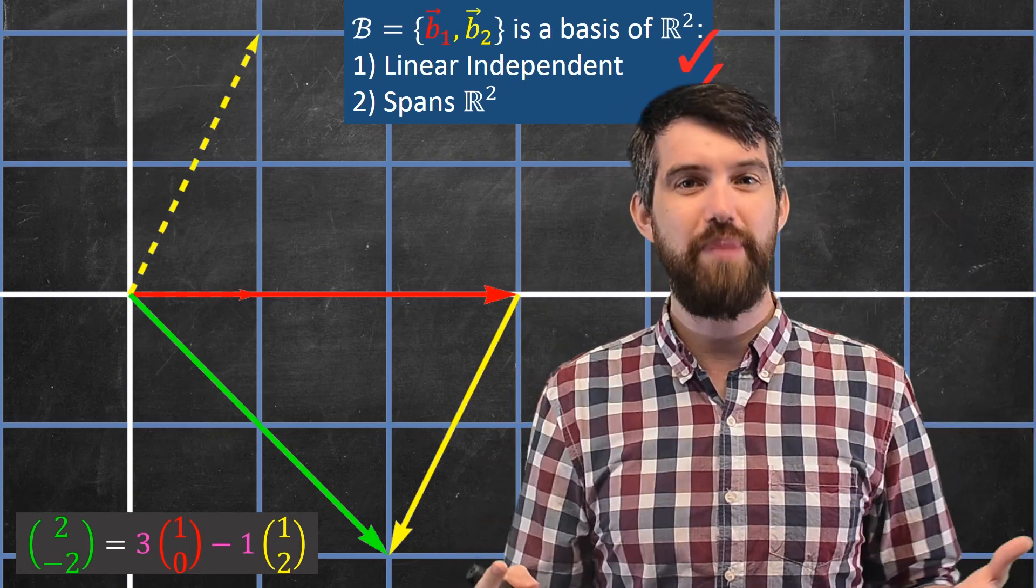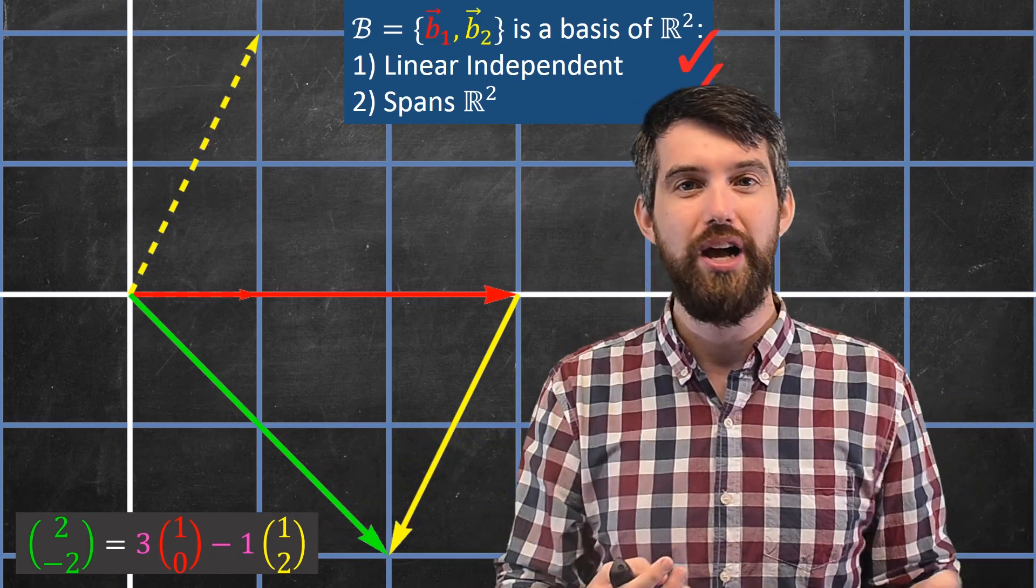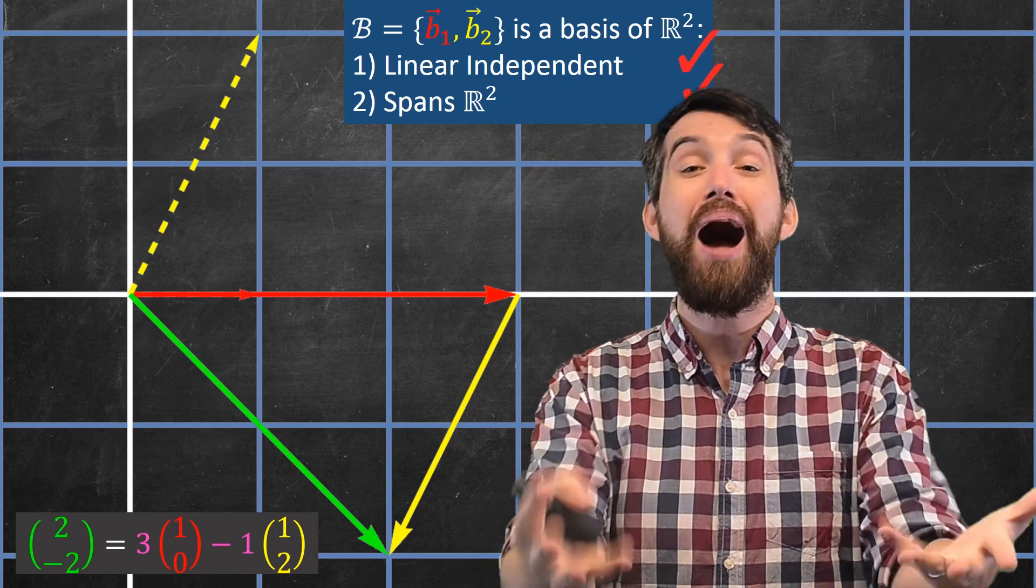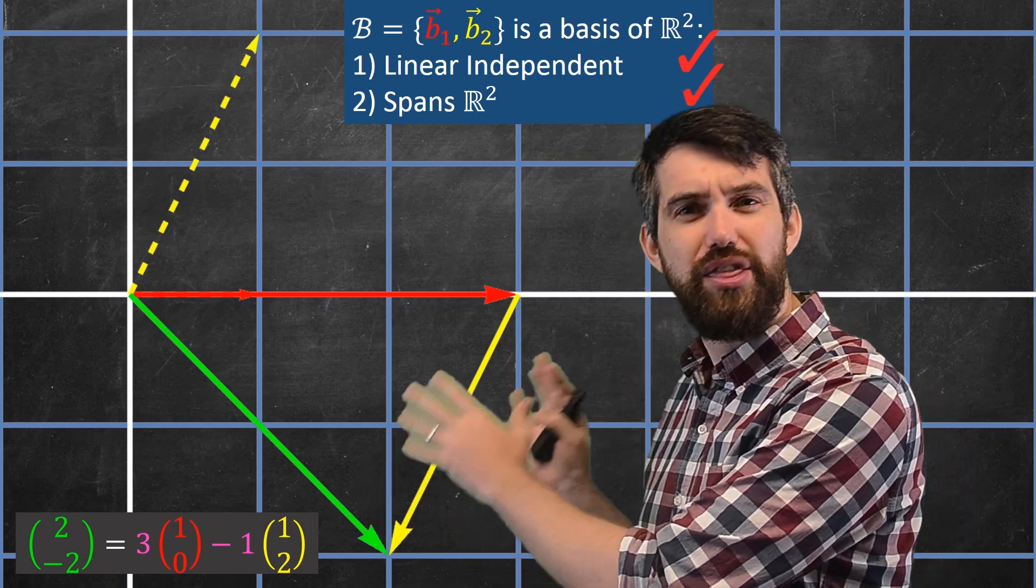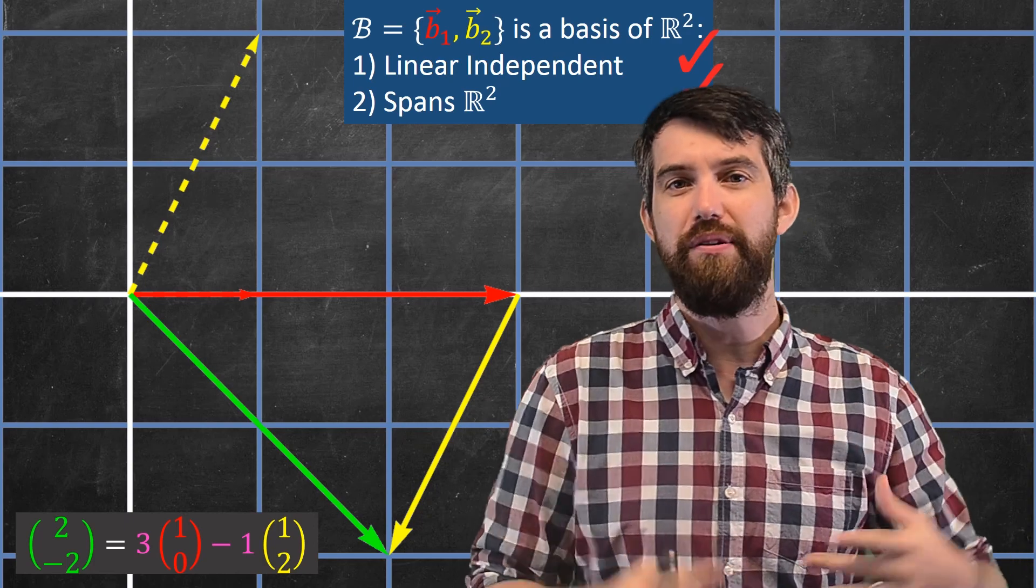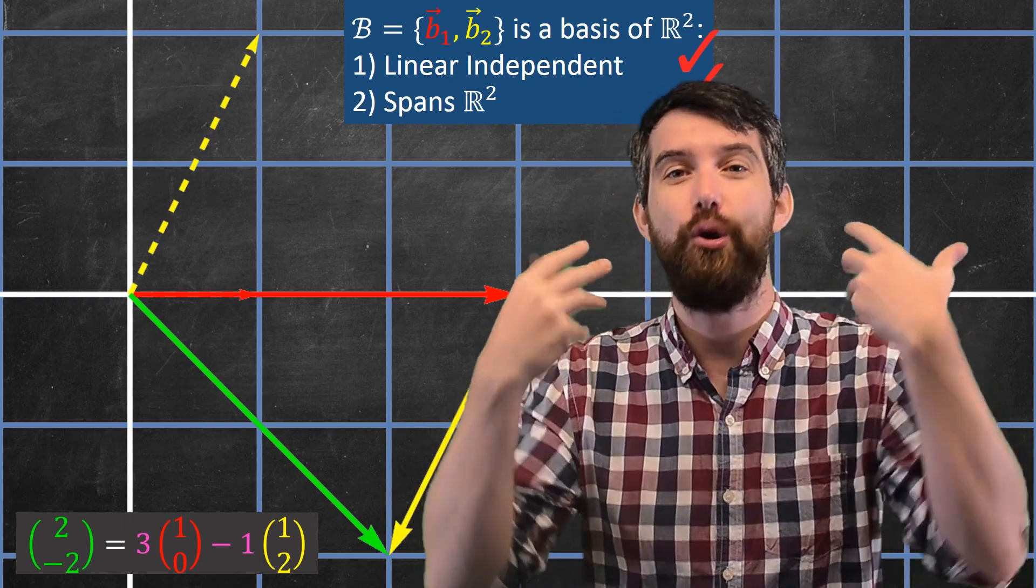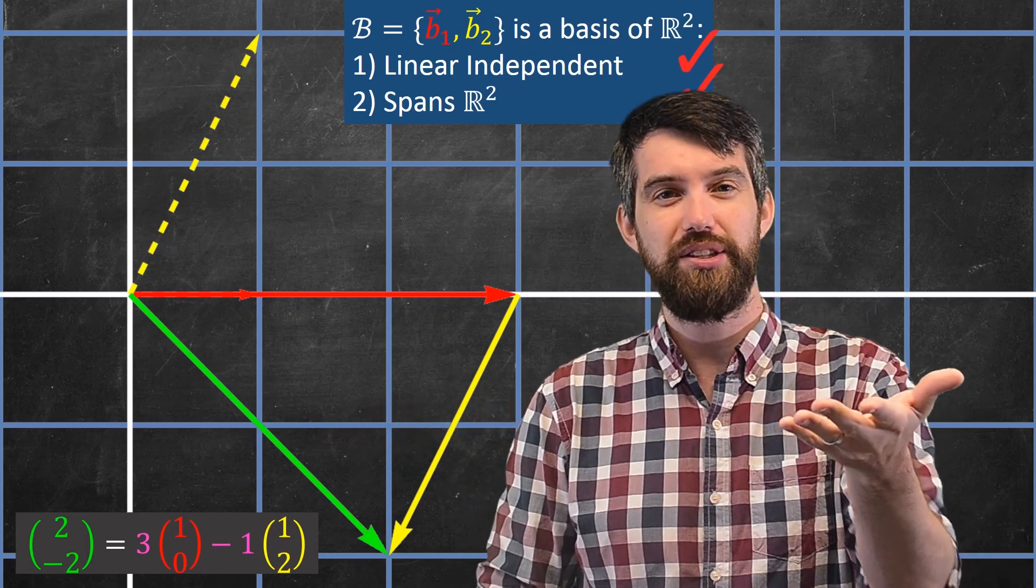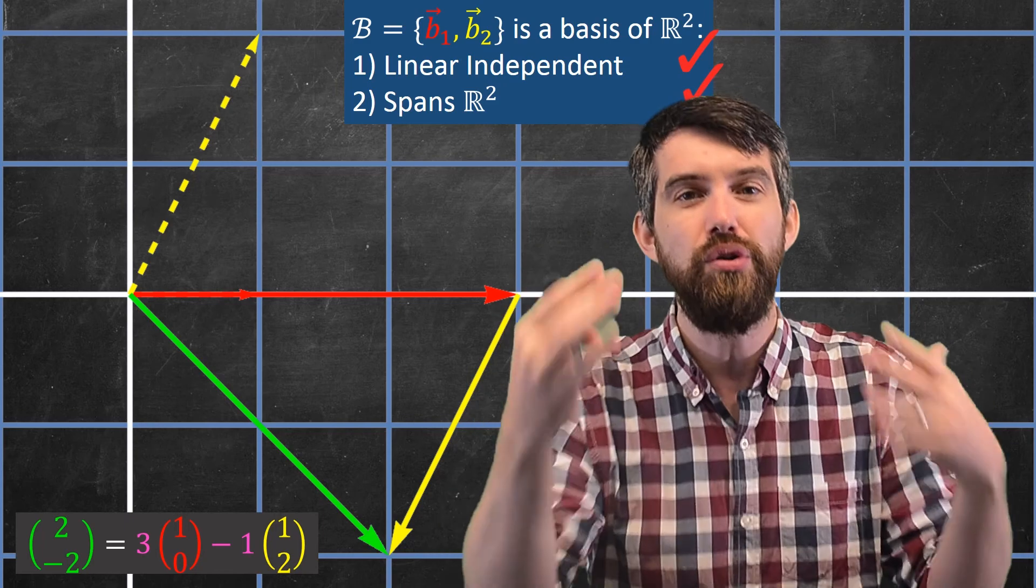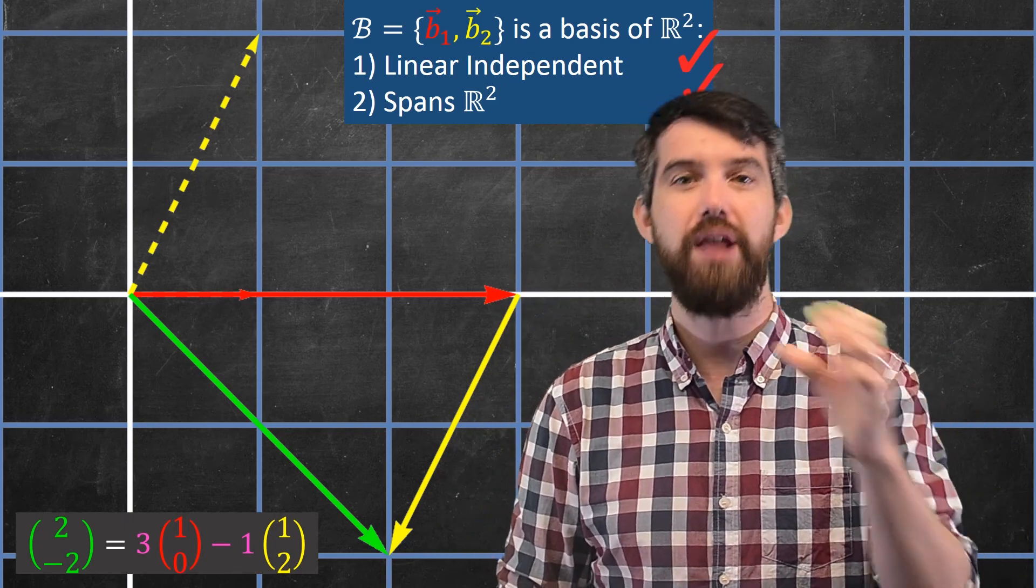Now, in the standard basis, the 2 and the minus 2 were sort of the crucial numbers. They told us how to go, twice along the e1 and minus 2 along the e2. But in this new basis, it's actually the 3 and the minus 1 that are the interesting numbers. It says go three times along the b1 and go minus 1 along the b2. The 3 and the minus 1 are the interesting numbers. So, I want to introduce some new notation to you that captures the importance of the 3 and the minus 1.